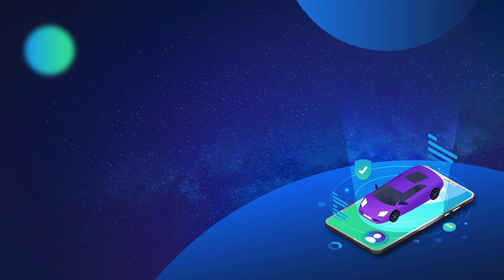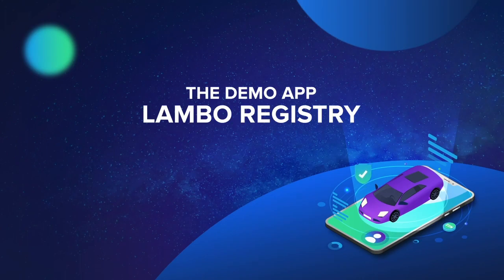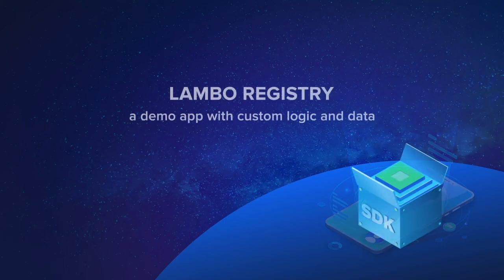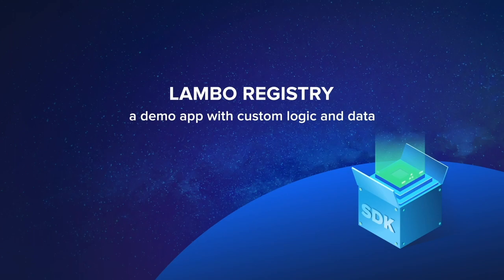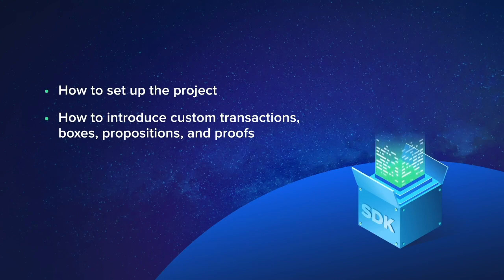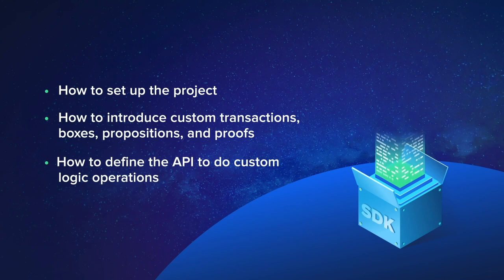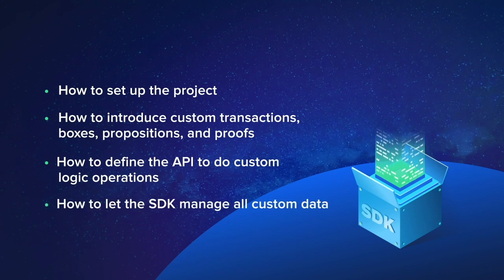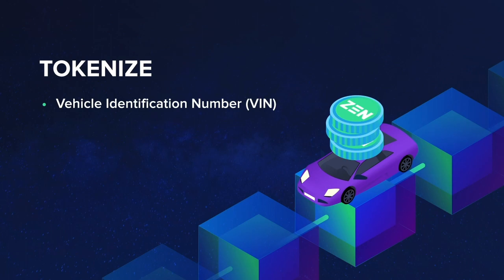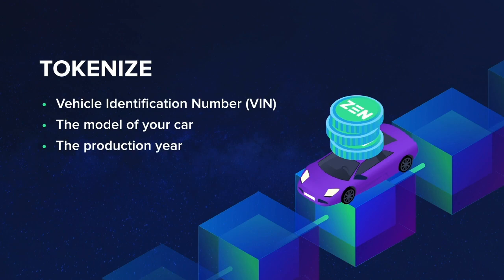The Horizon team developed the Lambo Registry application as an example of a blockchain application with custom logic and data that can be created using the SDK. It demonstrates how the SDK itself can be extended to support new functionalities, including how to set up the project, how to introduce custom transactions, boxes, propositions, and proofs, how to define the API to do custom logic operations, and how to let the SDK manage all custom data. In particular, with the Lambo Registry app, we have the possibility to tokenize vehicles by providing the main vehicle attributes like vehicle identification number, also known as the VIN, the model of your car. We chose it to be a Lambo Registry, so here we mean the specific model of your Lamborghini, the year when it was produced, and so on.